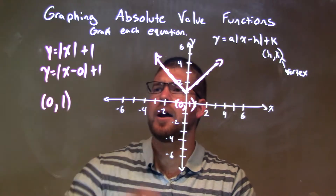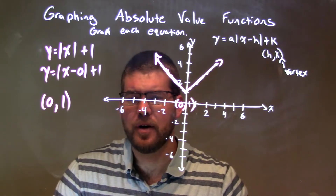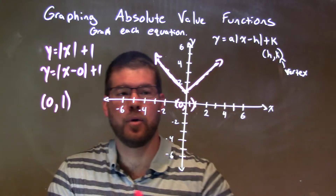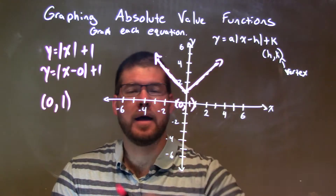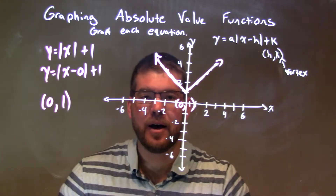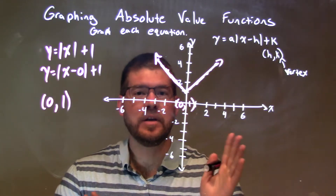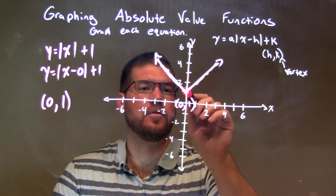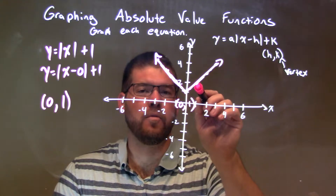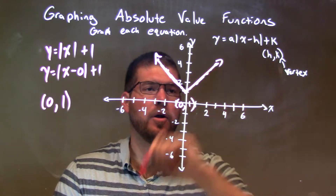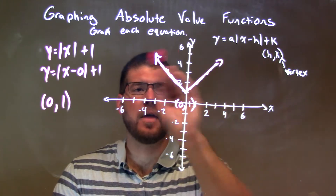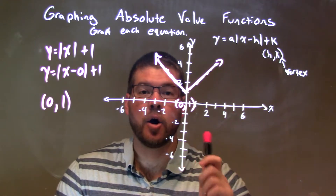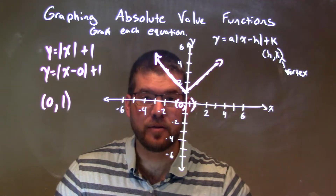Quick recap: y equals absolute value of x plus 1 has a vertex of zero comma one. Our a value is positive one, so it's a V-shape. Our slope was up one, mirrored on the left, then connect the dots — and we get our final answer.